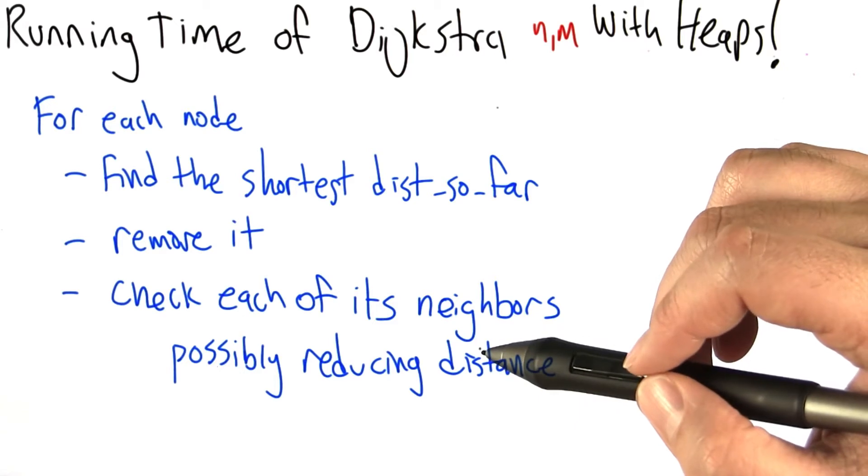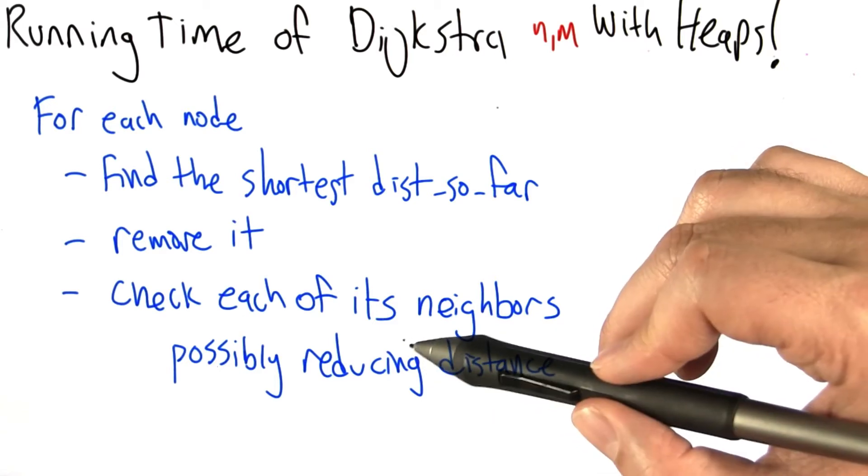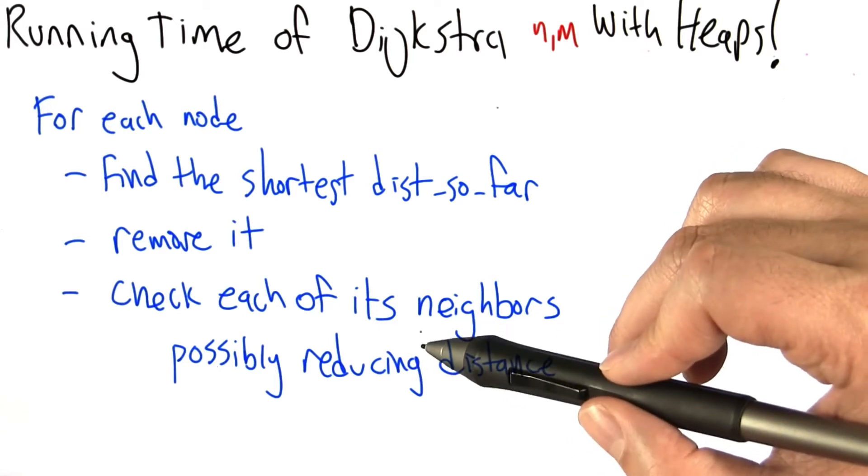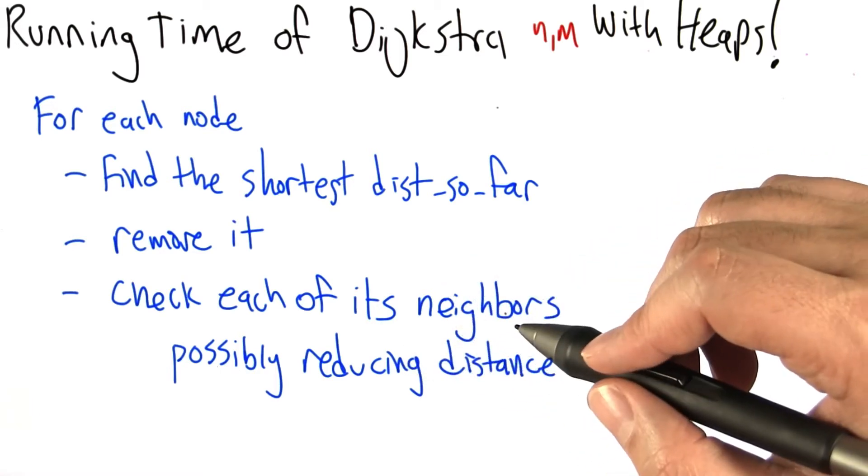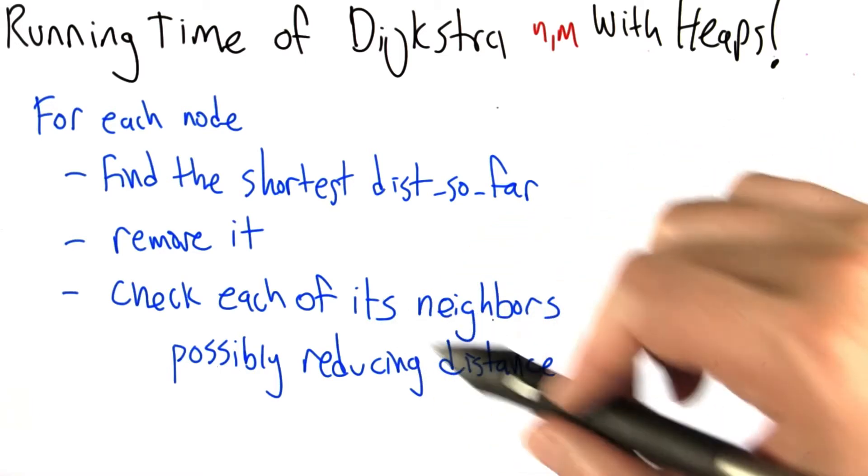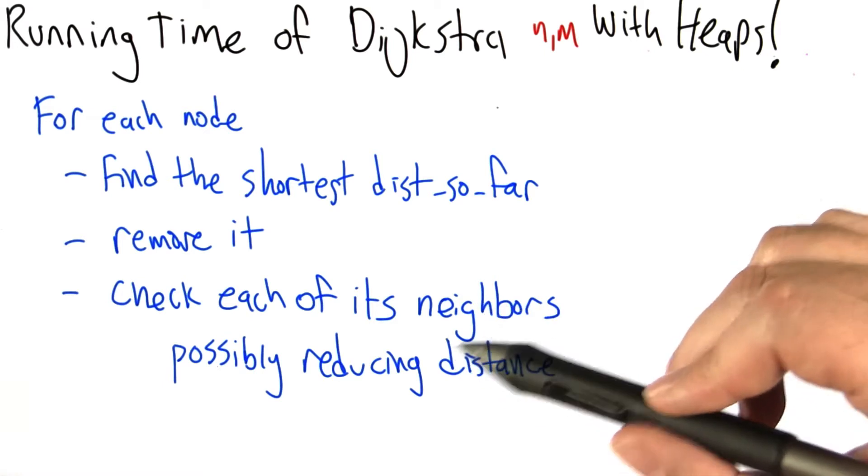So in your implementation, the thing you're going to have to really watch out for is making sure that when you update the value of a neighbor, you can find it in the heap, update the heap so that the heap property is restored, and all of this information is communicated back and forth.